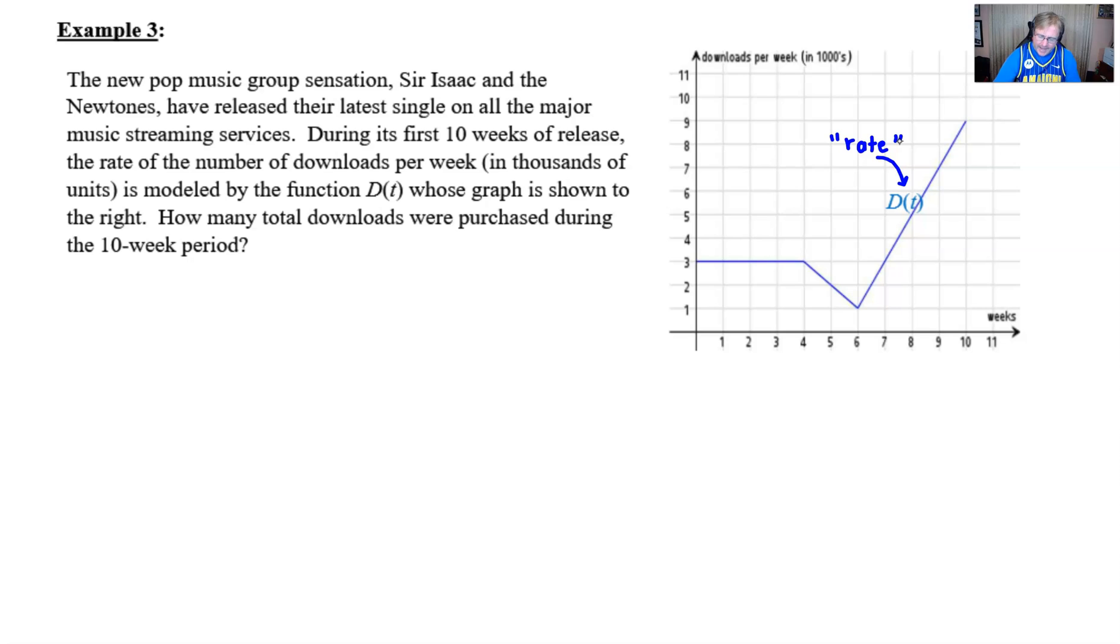Because we've learned something about whenever we're given a rate and we're asked to find a total amount, which is what's going on with this problem, we can basically take the two dimensions. We've got downloads per week and week as our two axes labels. We know that if we multiply those two phrases together, our answer would be in downloads, which is what we're trying to answer here.